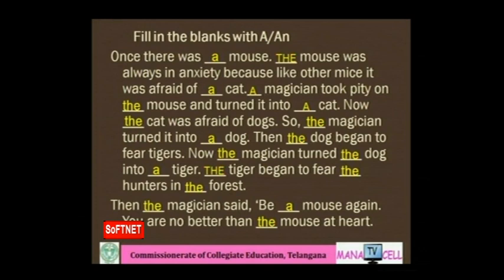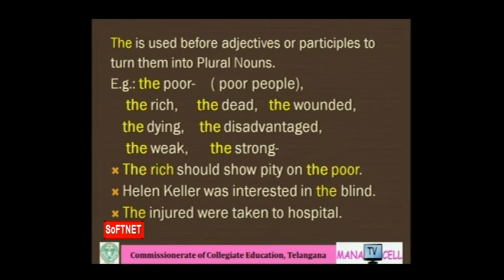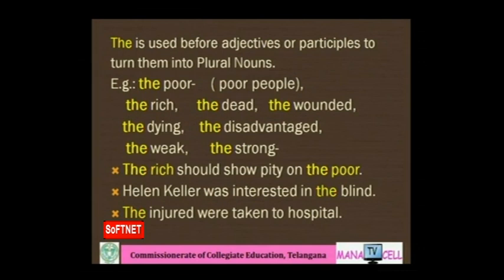'The' is used before adjectives or participles to turn them into plural nouns. For example: 'the poor' means 'the poor people', 'the rich' means 'the rich people', 'the disadvantaged', 'the weak', 'the dying', 'the strong'. The noun is implied but not stated. You can use 'the' with an adjective to suggest the plural sense: 'The rich should show pity on the poor. Helen Keller was interested in the blind. The injured were taken to hospital' means the injured persons.